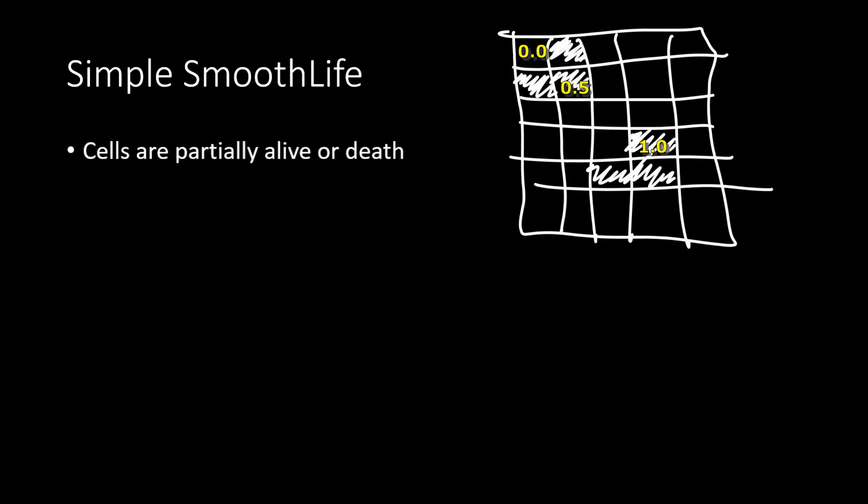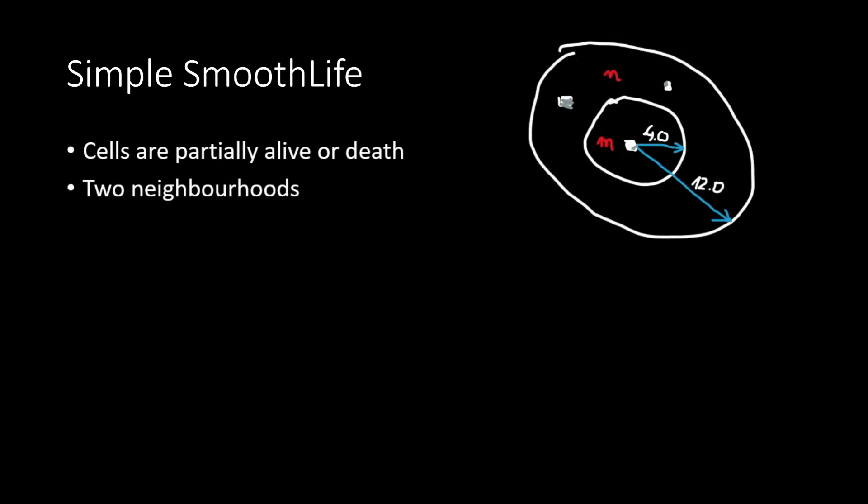Before going on to the algorithm and model evolution, I'm going to highlight another key difference between Standard Game of Life and Smooth Life. In Smooth Life, the neighborhood consists of two parts.